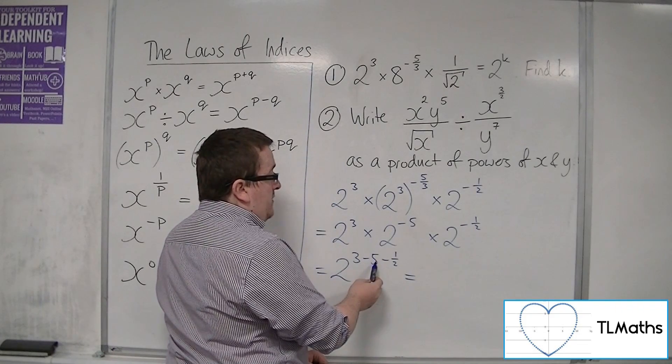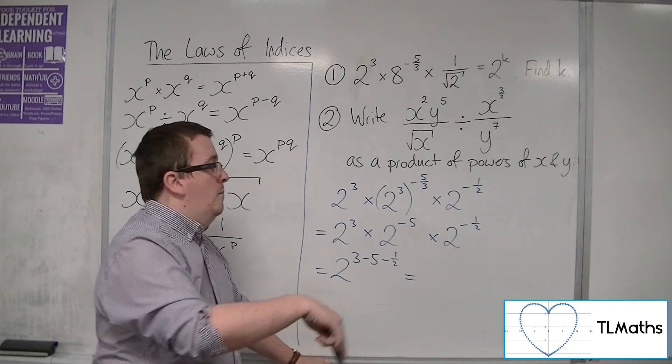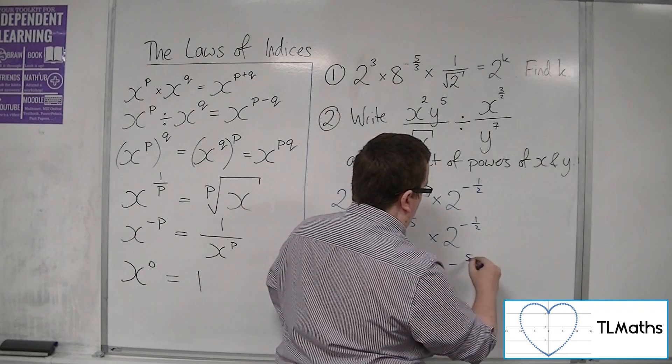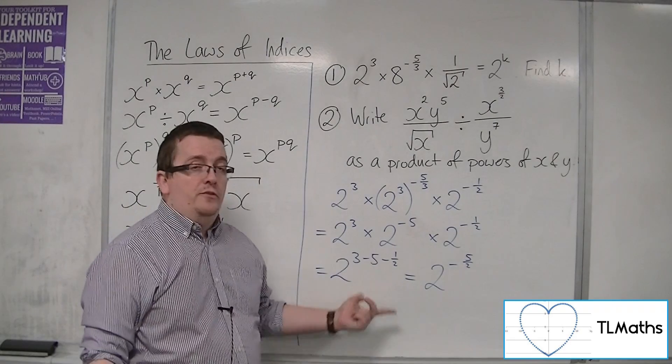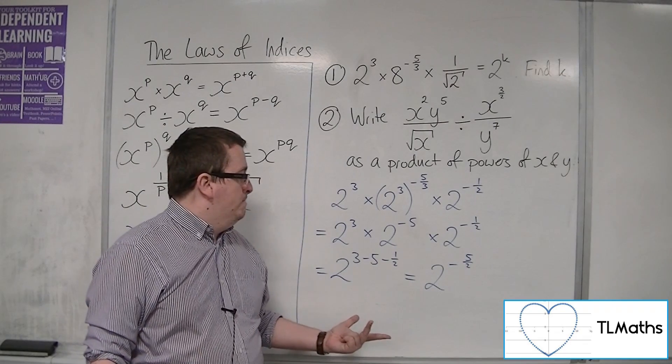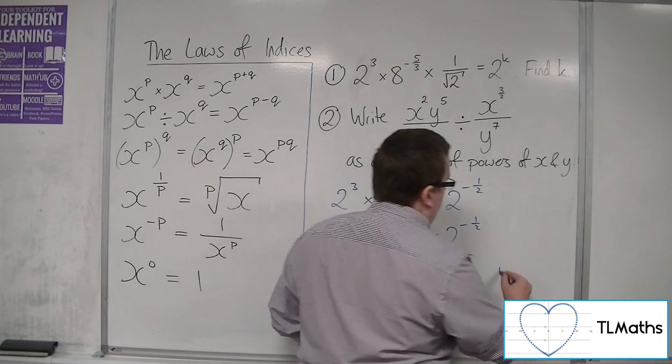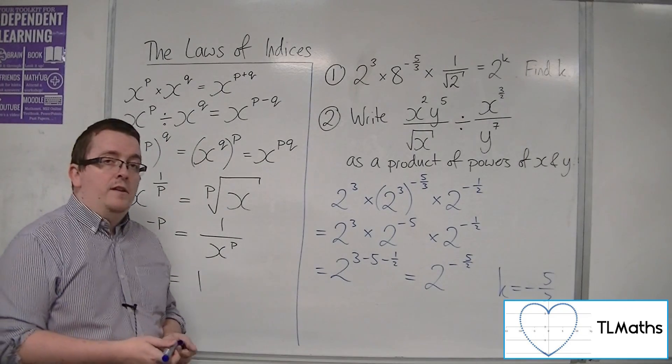Well, 3 take away 5 is minus 2. Take away another half is minus 2 and a half, or minus 5 halves, which is the same as minus 2.5 effectively. So k is minus 5 halves, and that's the answer we needed to find.